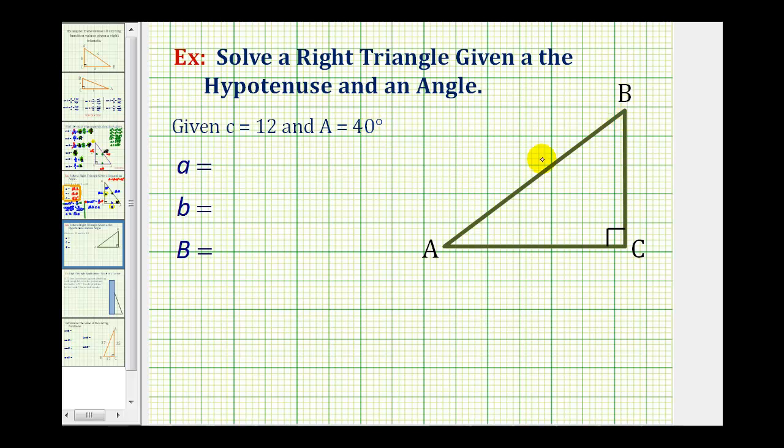Let's start by labeling each side of our right triangle. If this is angle A, then side A is opposite this angle. If this is angle B, then the opposite side is side B. If this is angle C, then the opposite side, the hypotenuse, would be side C.